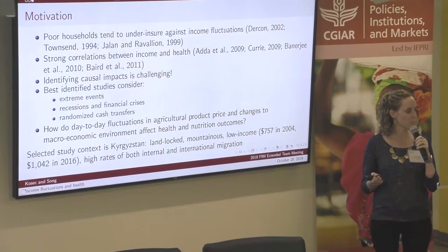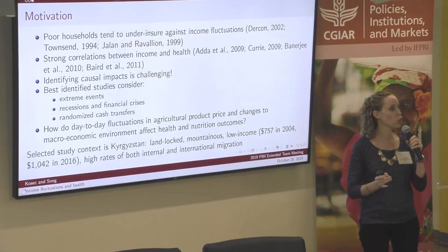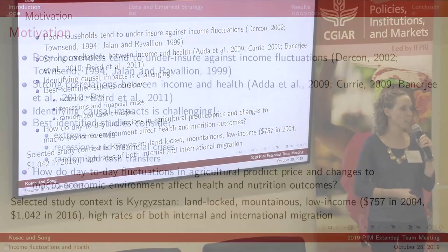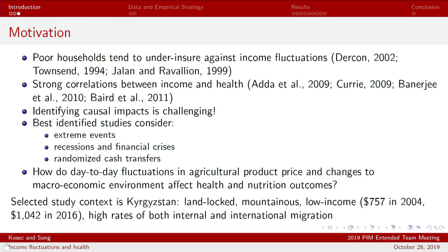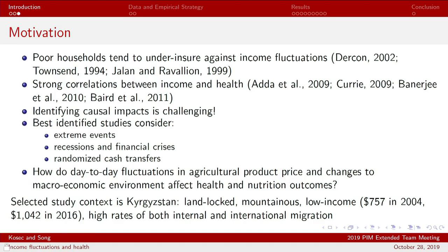In terms of motivation: poor households tend to under-insure against income fluctuations, and we know there are strong correlations between income and health. Causality is the perennial concern, and there is a great experimental and quasi-experimental literature that addresses this by looking at extreme weather events, major recessions, financial crises, and randomized cash transfers. However, the typical issues of external validity arise with RCTs or major events, and we really want to know what happens with day-to-day fluctuations in income outside of targeted populations or extreme events.